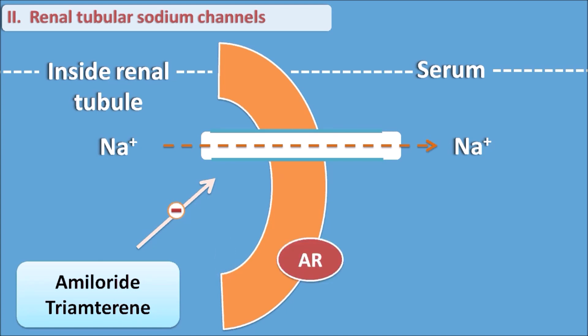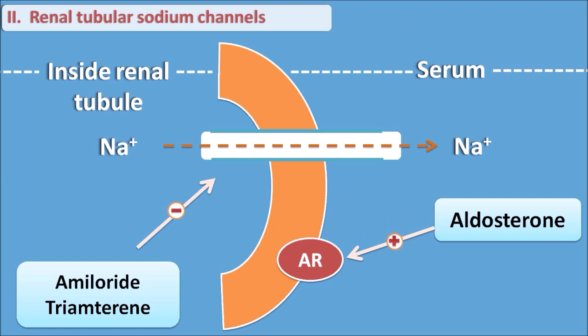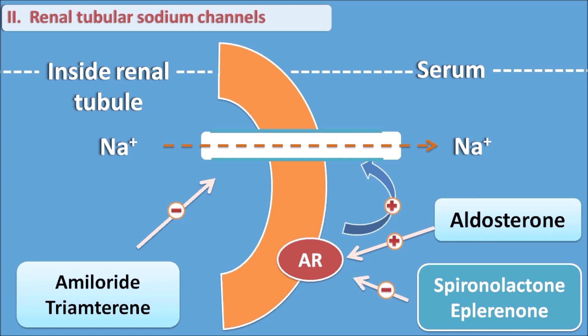Absorption of sodium through the renal tubules is also controlled by aldosterone. Aldosterone acts on aldosterone receptors, causing increased expression of renal tubular sodium channels, which increases sodium reabsorption. Drugs like spironolactone and eplerenone act as antagonists on the aldosterone receptor, thereby inhibiting sodium reabsorption. So amiloride and triamterene act as direct blockers on renal tubular sodium channels, whereas spironolactone and eplerenone act as negative modulators on these sodium channels.